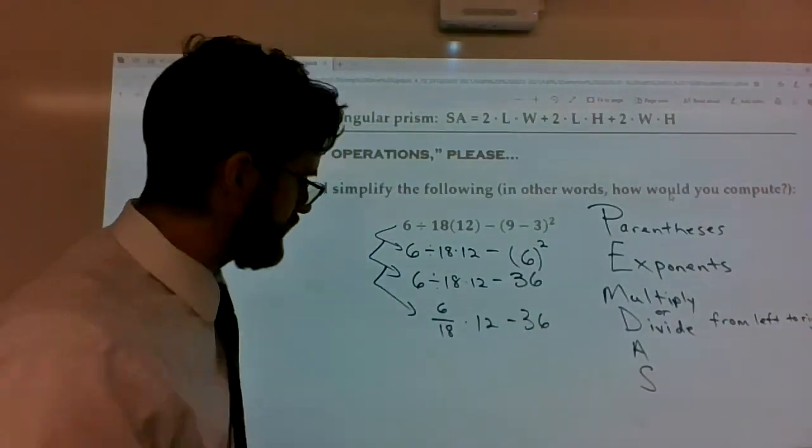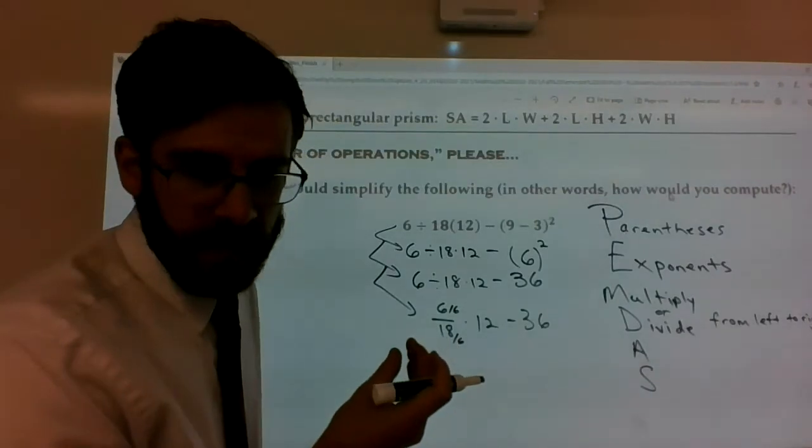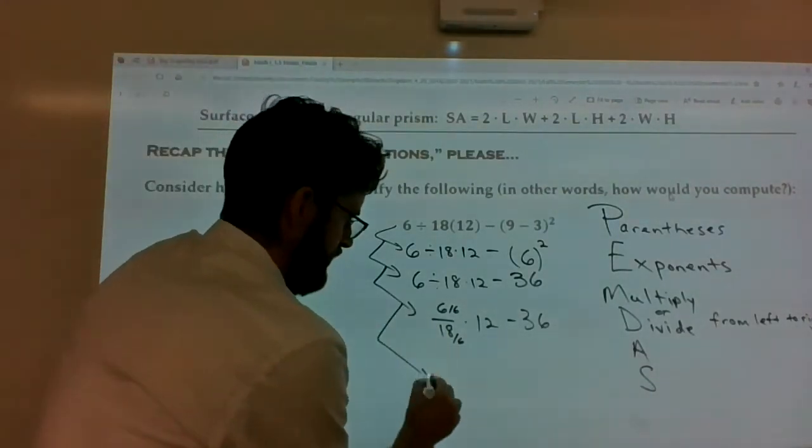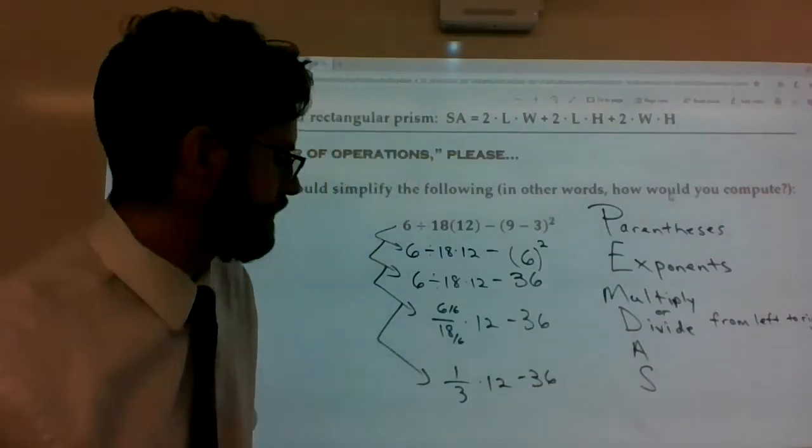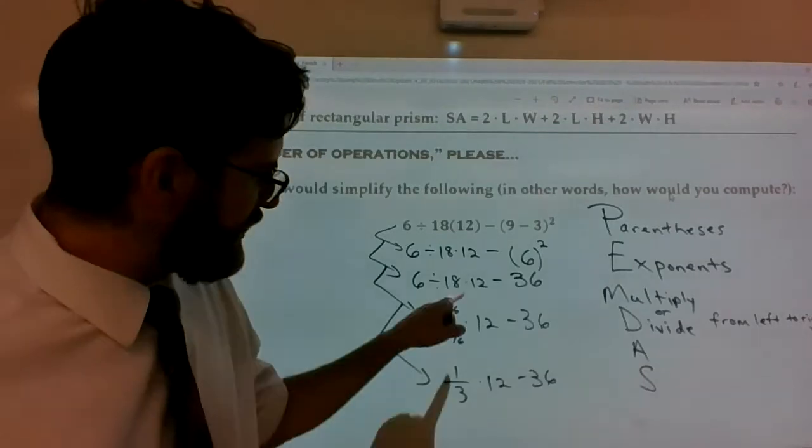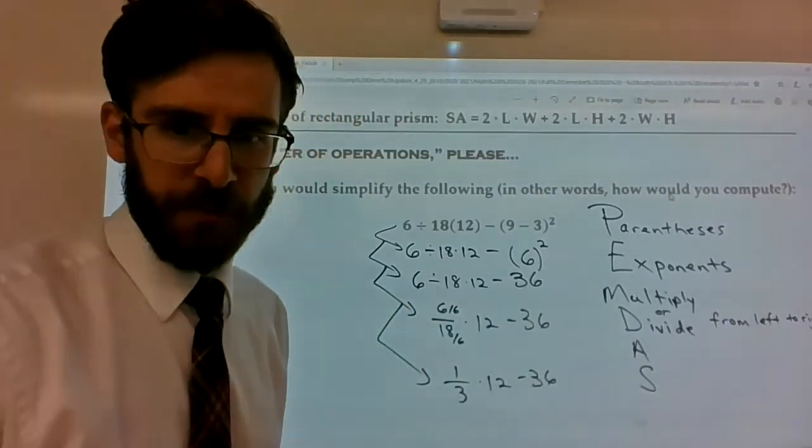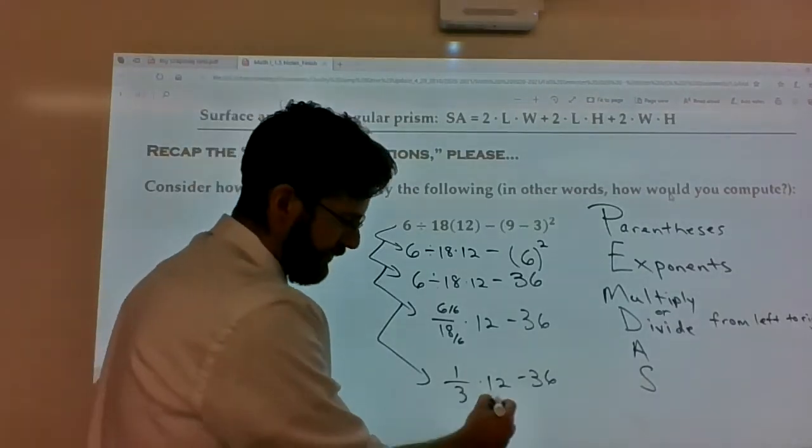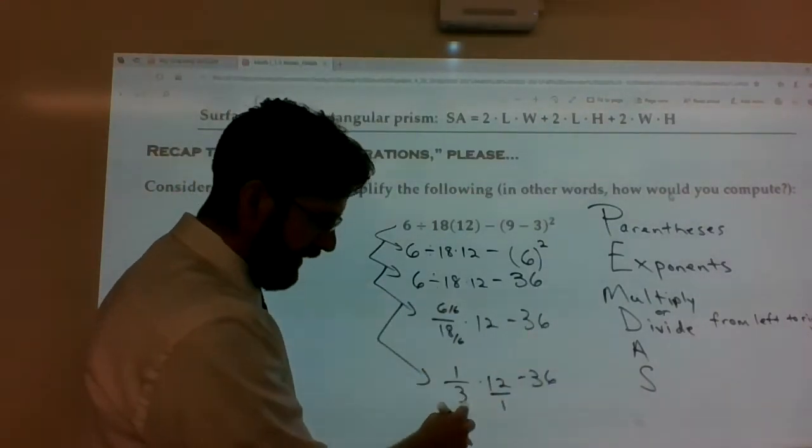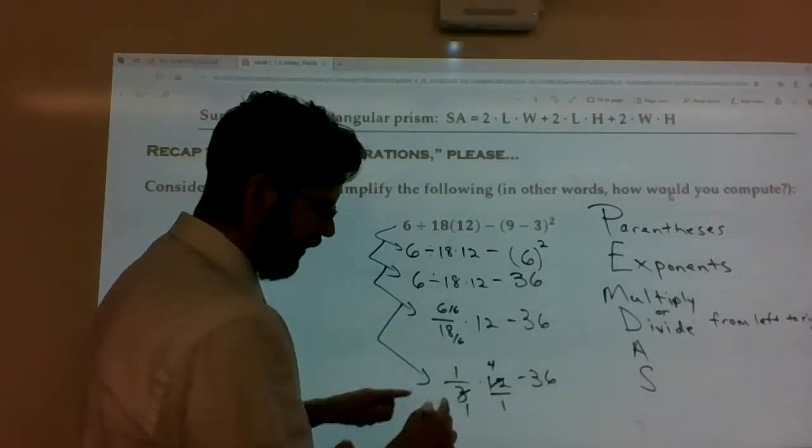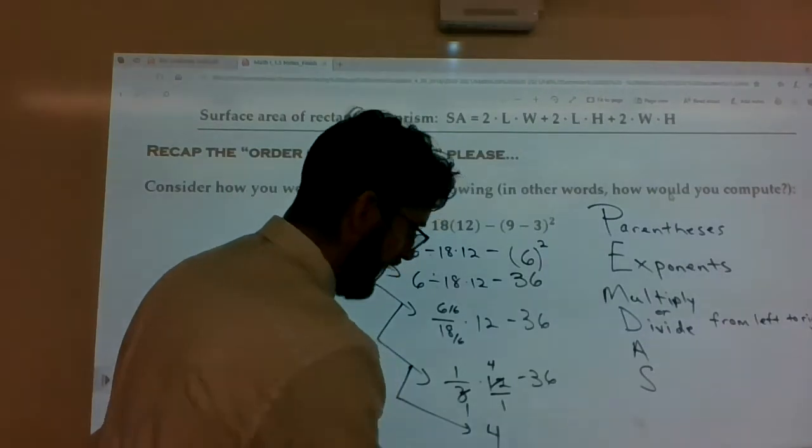Now, 6 divided by 18 can be reduced, right? You can divide the top by 6 and the bottom by 6 to make that 6 over 18 a less concentrated version of 1 over 3. So, it's 1 third times 12 minus 36 and it's multiply or divide left to right. So, we kind of did the division when we turned it into a fraction and we simplified it. Now, multiply from left to right, that would be our next move in the order of operations. And to multiply a fraction times a whole number, we put the 12 over 1 and you can multiply straight across and then divide it or cross cancel. 12 divided by 3 is 4 over 1. 1 times 4 is 4. 1 times 1 is 1. So, it's pretty much 4.